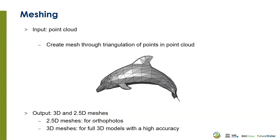The next step is to create a mesh from the point cloud. Basically it connects all the dots through triangulation. The output of this step is a 3D or a 2.5D mesh. A 2.5D mesh is sufficient for creating orthophotos. For more accurate 3D modeling you need 3D meshes.